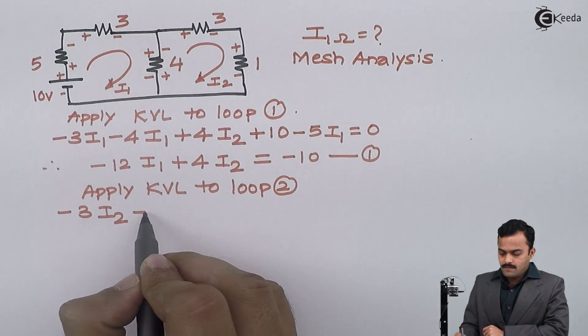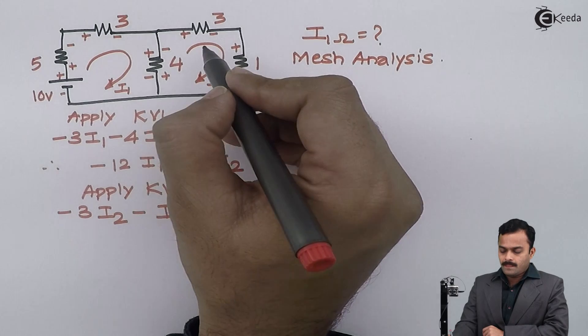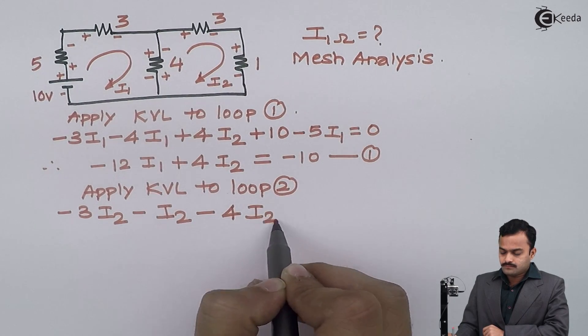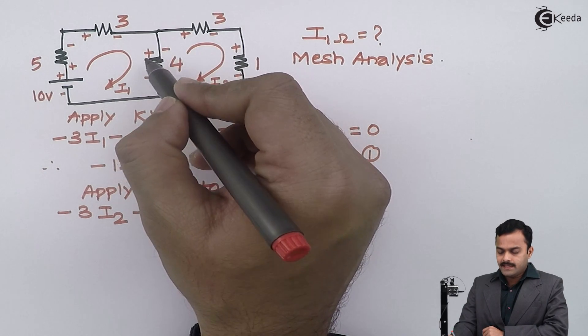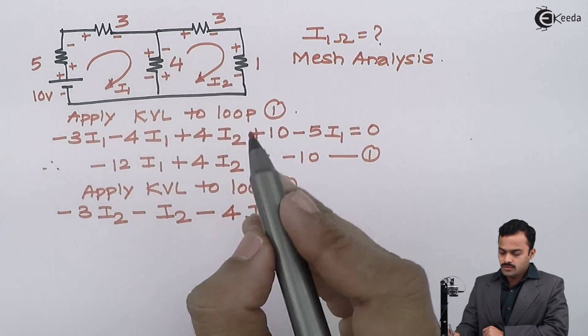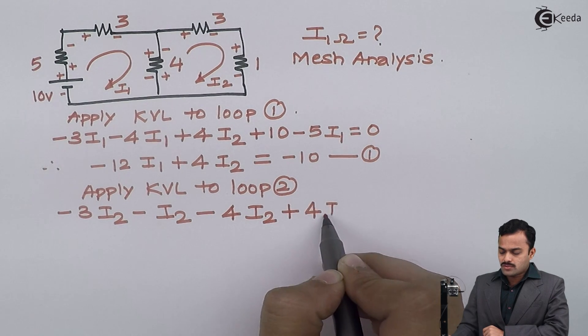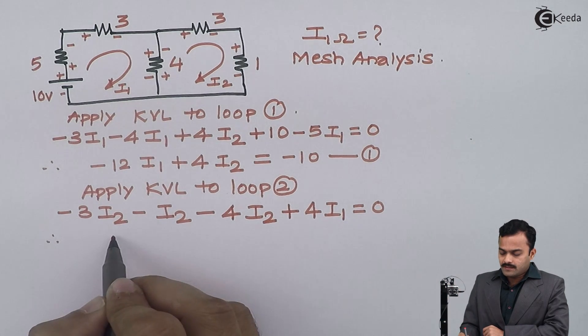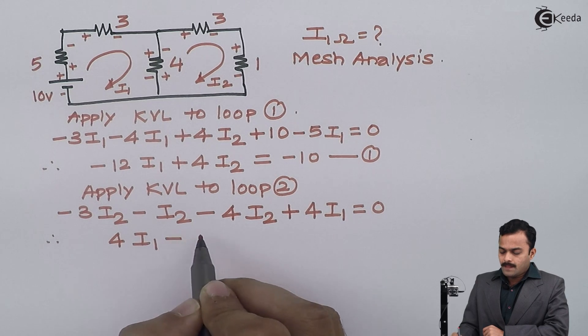Plus minus again a voltage drop minus 4 I2. In the direction of this current I am having minus plus one more voltage but the polarity changing from minus to plus so it's a voltage rise plus 4, and this is because of I1. After simplifying I will get equation 4 I1 minus 8 I2 equal to 0, equation number 2.